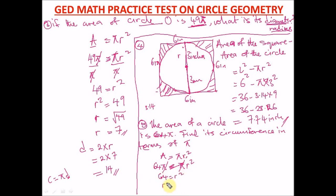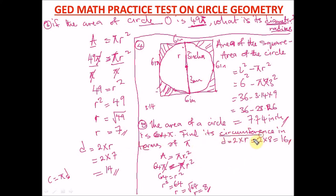Taking the square root: r = √64 = 8. Then the diameter d = 2 × r = 2 × 8 = 16. The circumference C = π × d = π × 16 = 16π. Since the question asked for the answer in terms of π, our final answer is 16π. You'll see this in the answer options.